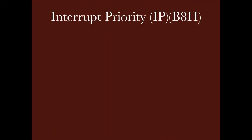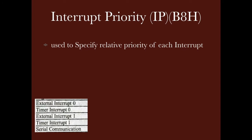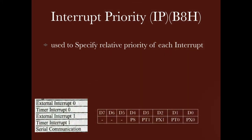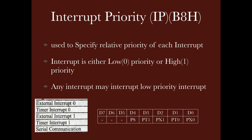Now we come to the interrupt priority register, at B8H. This register sets the relative priority of interrupts. We have 5 interrupts: external interrupt 0, timer 0, timer 1, external interrupt 1, and serial communication interrupt. We can set each interrupt as low or high priority. If a bit is 0, the interrupt is low priority; if 1, it is high priority. PS is serial port, PT1 is timer 1, PX1 is external interrupt 1, PT0 is timer 0 priority, and PX0 is priority of external interrupt 0. A high-priority interrupt can interrupt a low-priority interrupt.